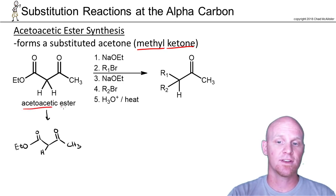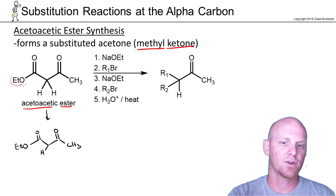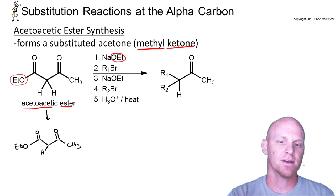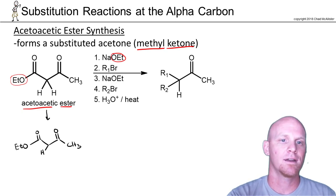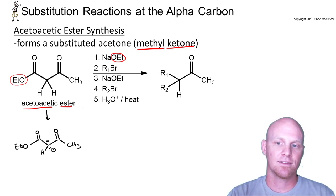We start with acetoacetic ester, similar to malonic ester, but instead of having an ester on one side, it has a ketone on one side. The leaving group in our ester is still OEt, so the base we use in step one is still going to be an ethoxide base. This will deprotonate one of our alpha hydrogens, giving us an enolate.